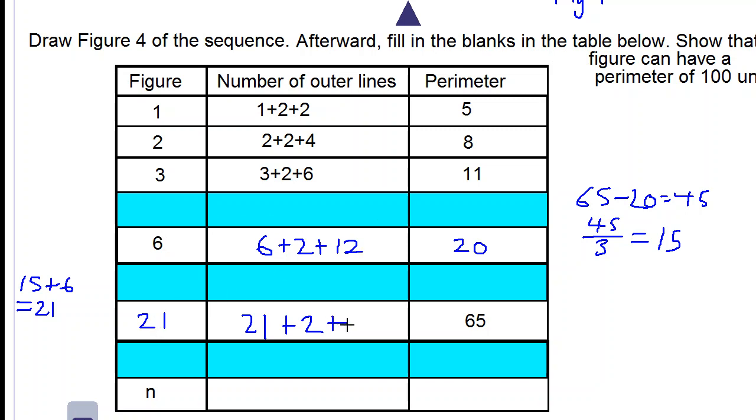Six times two is twelve, twenty-one times two is forty-two. Twenty-one plus two is twenty-three, plus forty-two is sixty-five, so our answer checks out so far.